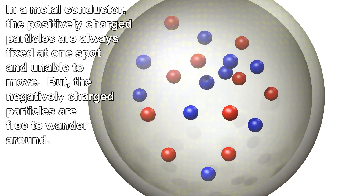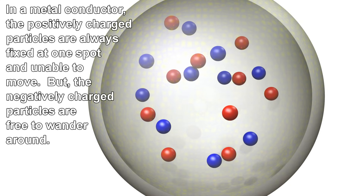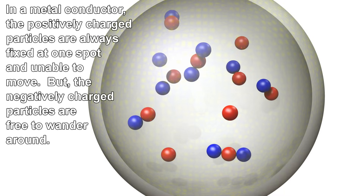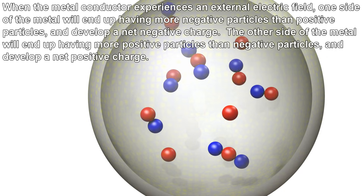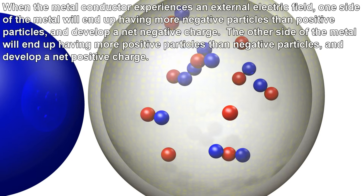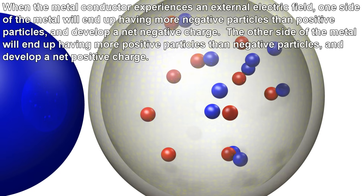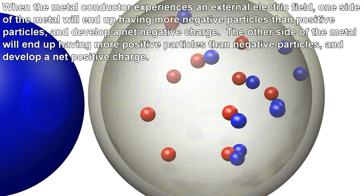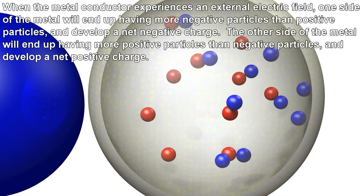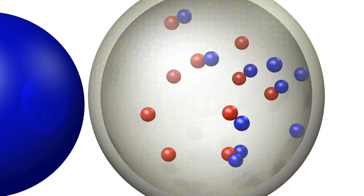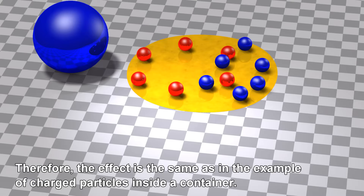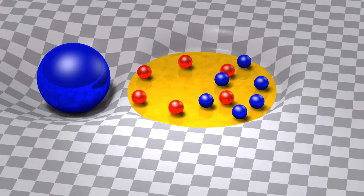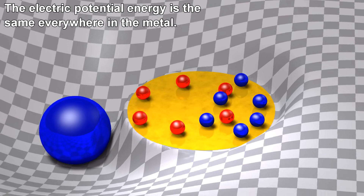In a metal conductor, the positively charged particles are always fixed at one spot and unable to move, but the negatively charged particles are free to wander around. When the metal conductor experiences an external electric field, one side of the metal will end up having more negative particles than positive particles and develop a net negative charge. The other side will end up having more positive particles than negative particles and develop a net positive charge. Therefore, the effect is the same as in the example of charged particles inside a container — the electric potential energy is the same everywhere in the metal.